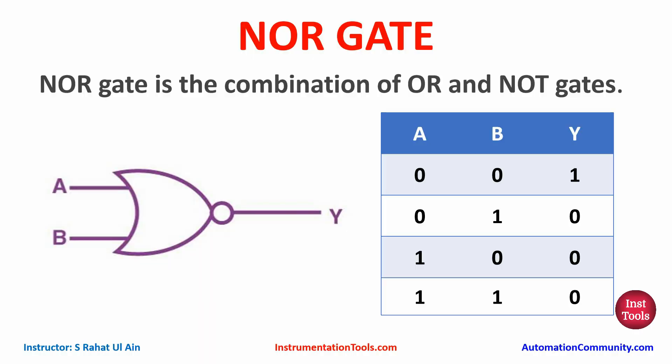NOR gate is the combination of OR and NOT gates. As you can see in the table, when both the inputs are false then only the output is true. When only one input is true and another is false, the output is also false. When both inputs are true, the output is also false. So for output Y to be on, both inputs should be off.